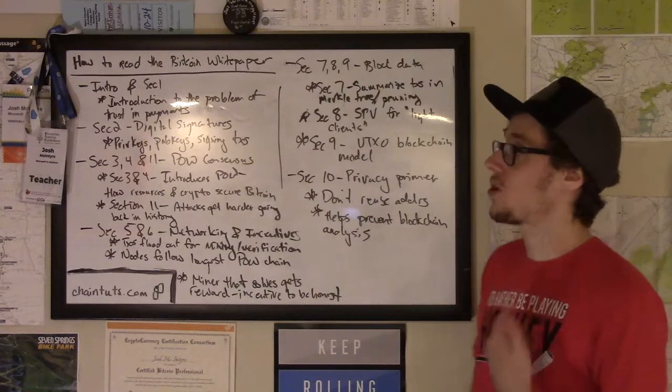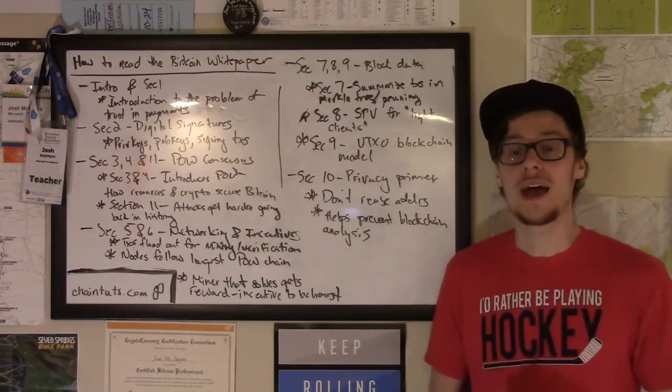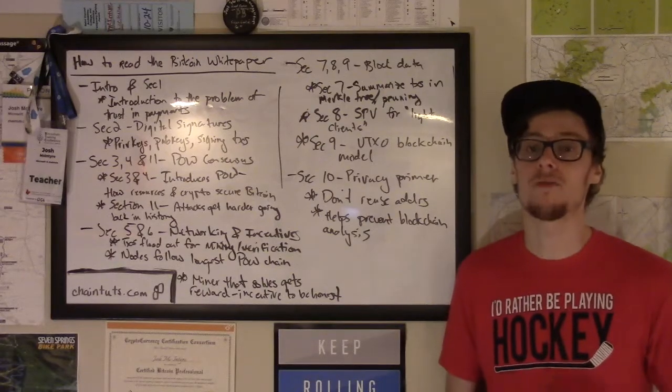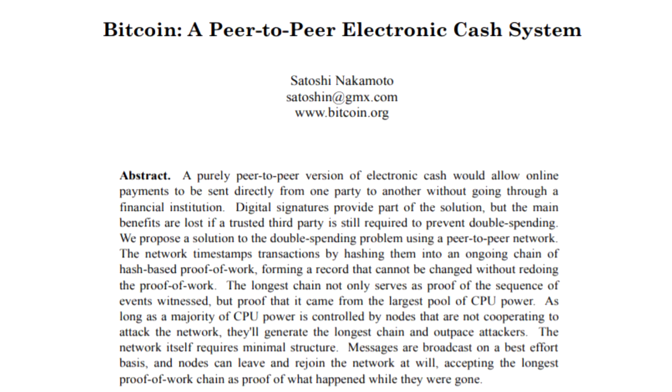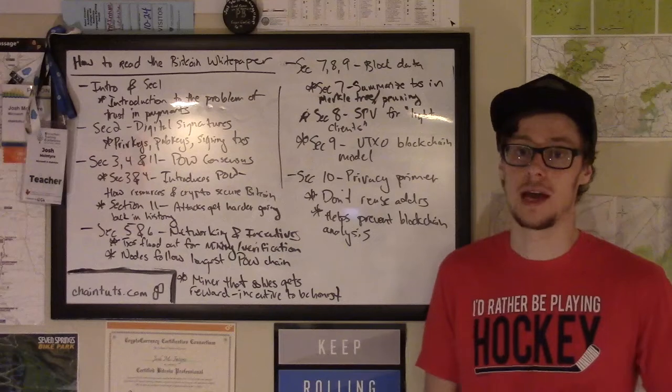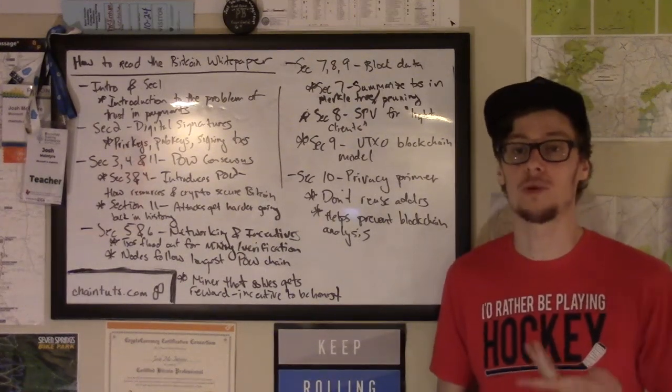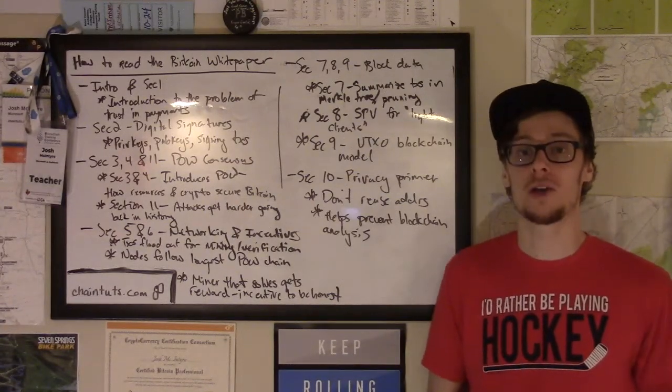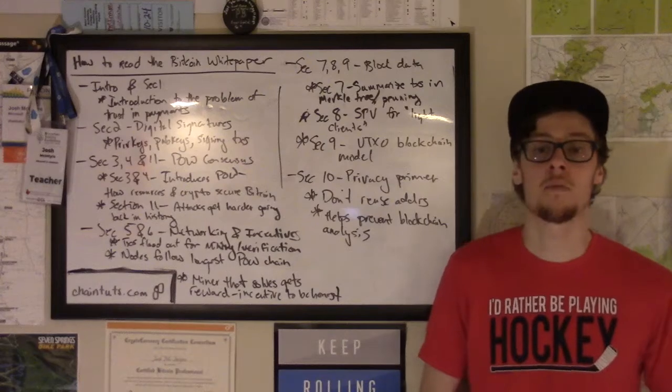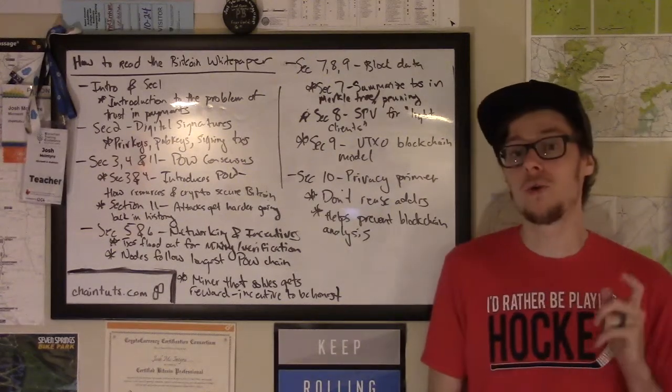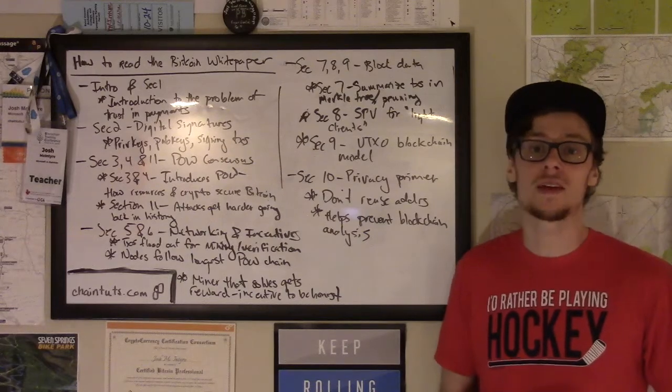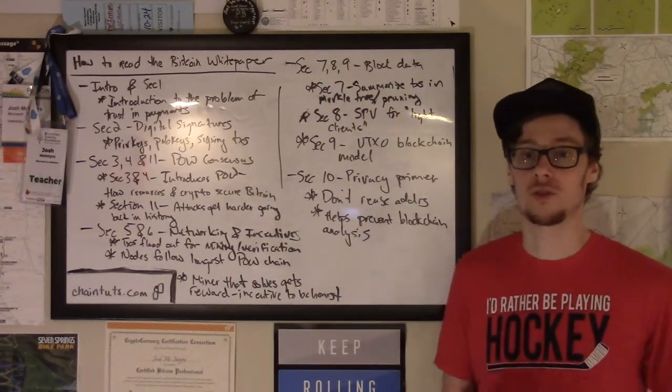We start out the paper with an abstract and the first section, talking about solving the problem of the need for trust in online payments. In our traditional payment systems, like using debit or credit cards or PayPal, there's trusted intermediaries that verify that people own a certain amount of funds and that they can send them to somebody else. They also act as the source of truth when it comes to the problem of double spending, making sure that if you spend your money, you can only spend it once. Bitcoin seeks to solve this problem in a way that doesn't require any trusted institutions or central authorities.